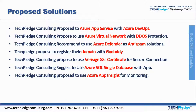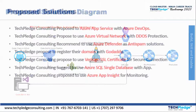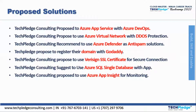Tech Pledge Consulting also proposes using Azure Virtual Network with DDoS protection to protect IPs and resources from denial-of-service attacks. Azure Defender is recommended as an anti-spam solution. For domain registration, they go with GoDaddy. They also propose using a VeriSign SSL certificate for secure connections.